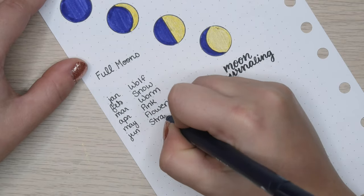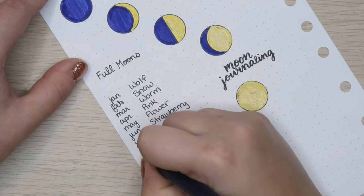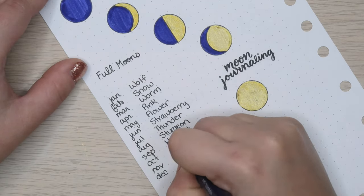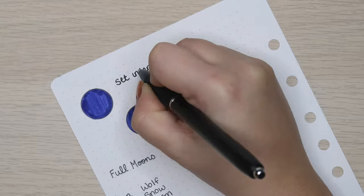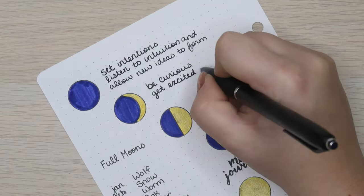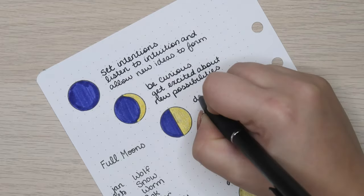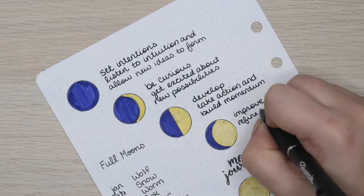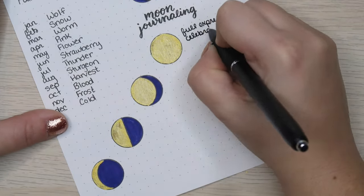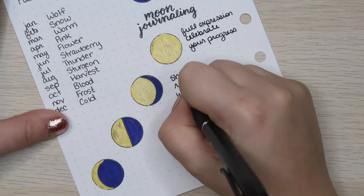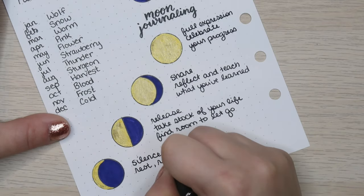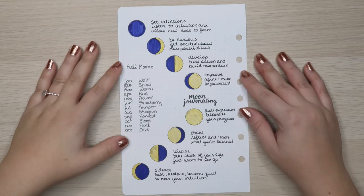So every month when I do my moon journaling, I have one page where I can see all of this information at one time. If you're not familiar with moon journaling, it's basically just journaling along with the phases of the moon. The only difference is that you focus what you talk about based on which phase of the moon we're currently in. I've also included all of the full moon names for each month.